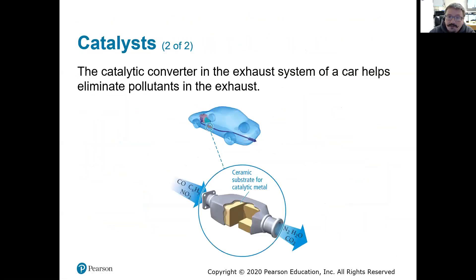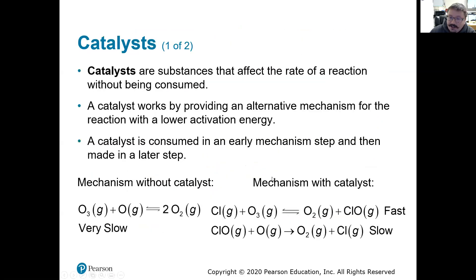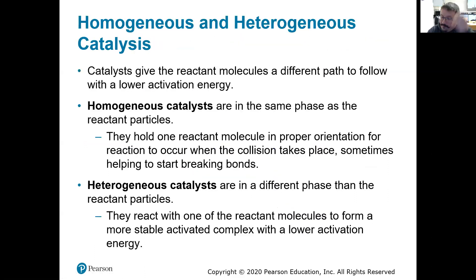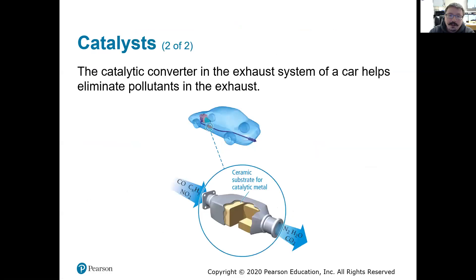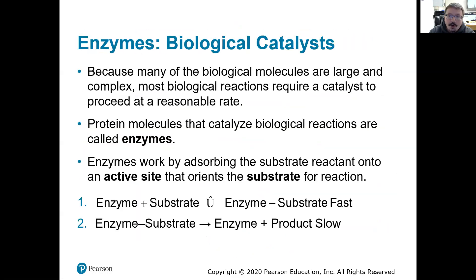Just know: if you see a reaction, can you identify in those elementary steps what the catalyst would be and how that would differ from an intermediate? Know your definitions for homogeneous and heterogeneous catalysts, and know what an enzyme is and how it fits into the overall definition of a catalyst. That's the end of chapter 15 on kinetics — we'll see you next for nuclear chemistry.